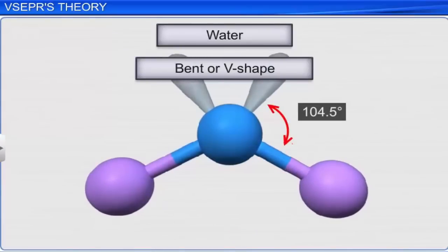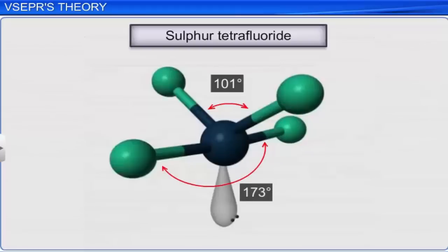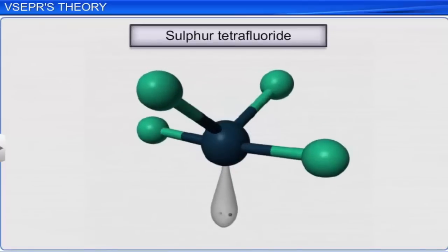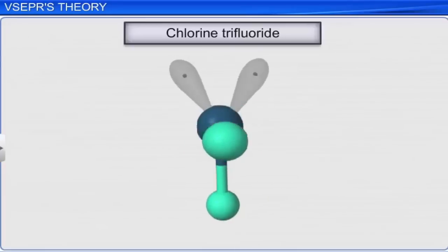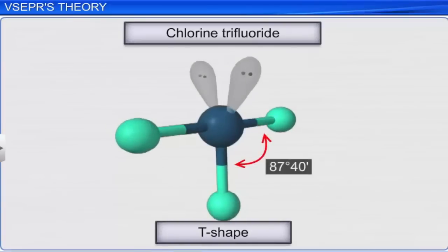A sulfur tetrafluoride molecule is seesaw-shaped, as its bond angles are at 101 and 173 degrees due to the lone pair of electrons present on its central atom. The chlorine trifluoride molecule is T-shaped, with a bond angle of 87 degrees 40 minutes, and the molecule shape is distorted due to the two lone pairs of electrons on the central chlorine atom.